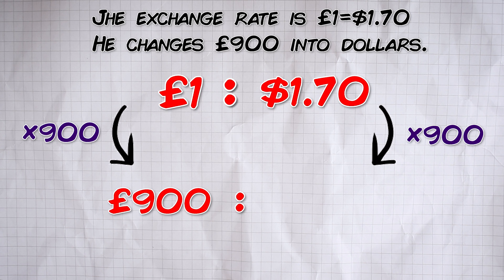$1.70 times 900 is $1,530. So, £900 equals $1,530. And just as a little check, our dollar side is still greater than our pound side, just as it should be.